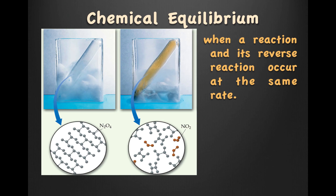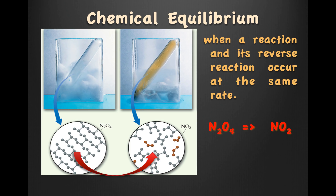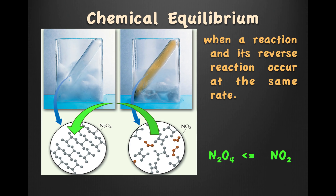Chemical equilibrium. What is chemical equilibrium? Chemical equilibrium is when a reaction and its reverse reaction occur at the same rate. In this example, we have N2O4 changing into NO2. That's the forward reaction. Equilibrium is when the reverse reaction is occurring at the same time. When these opposite reactions occur at the same rate, you're at equilibrium.